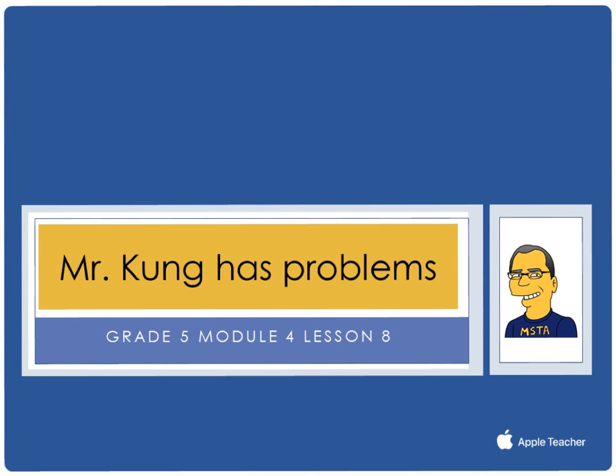Hello, and welcome to another episode of Mr. Kung Has Problems. Tonight in grade five, in module four, we are working on lesson number eight, and that means that we are relating a fraction of a set to the repeated addition interpretation of fractional multiplication. So we'll take a look at at least three different problems from tonight's homework, because you have a lot of different kinds of problems on tonight's homework.